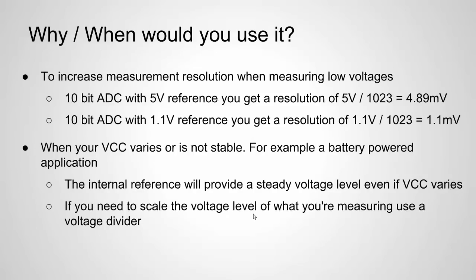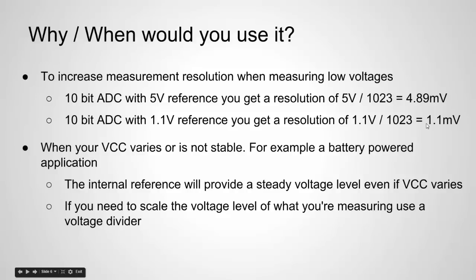Why and when would you want to use the internal reference? First, to increase measurement resolution. If a sensor only outputs 0 to 0.8 volts, using the 1.1-volt internal reference instead of a 5-volt reference gives much better resolution — you can notice smaller changes in the sensor. There are other factors affecting resolution and accuracy, but using a lower reference value will increase your resolution when measuring small voltages.